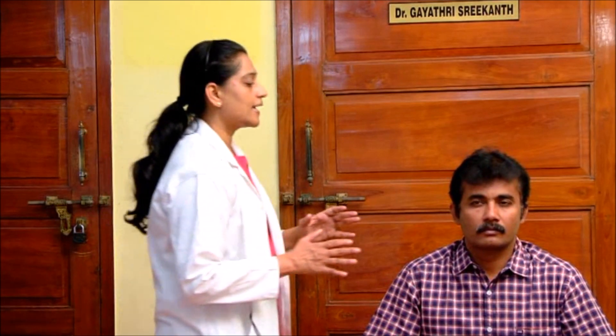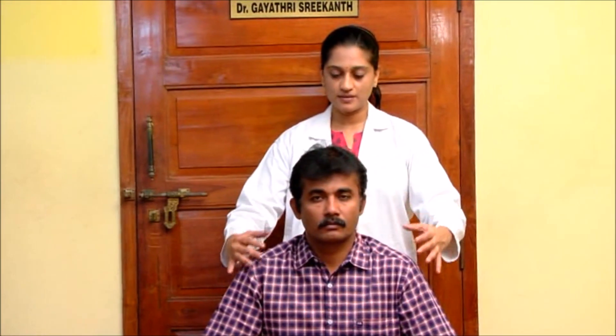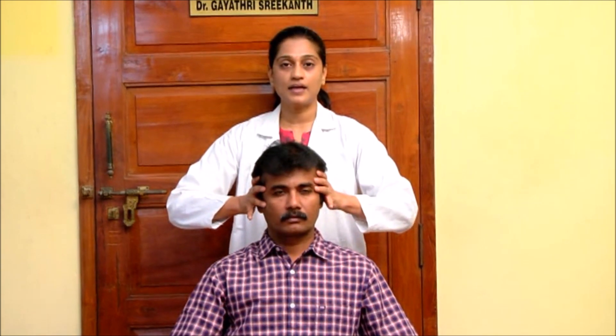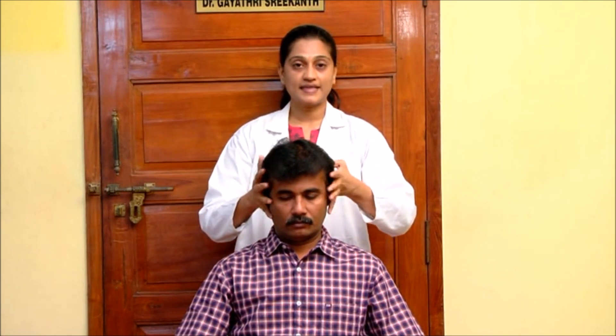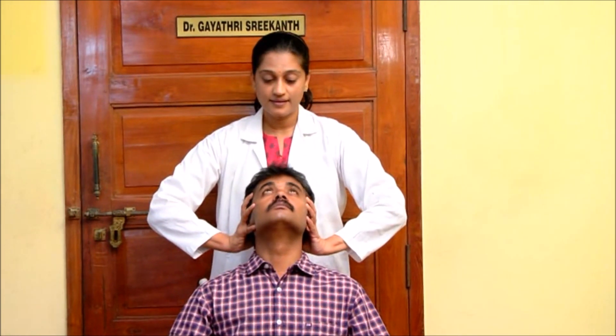Always confirm the prominence as proptosis only by performing the Naffziger sign. This is done by going behind the patient. Your thumbs rest on the occiput and the other fingers rest gently to the sides of the patient's occiput. First ask if the patient has any neck pain — if so, abandon this test. If there is no neck pain, place thumbs on the occiput, other fingers on the sides, and gently extend the head.